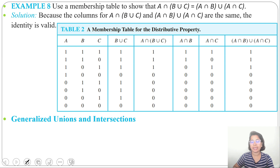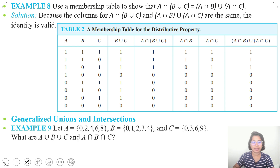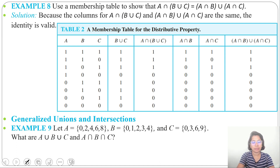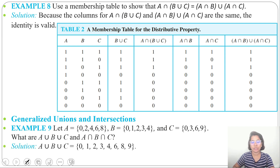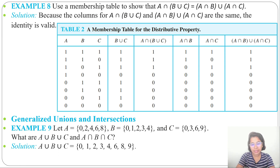Next is generalized union and intersection — how to find union and intersection of multiple sets. Example 9: we have three sets A = {0, 2, 4, 6, 8}, B = {0, 1, 2, 3, 4}, C = {0, 3, 6, 9}. For A ∪ B ∪ C, it contains all elements present in A, B, and C, so it is {0, 1, 2, 3, 4, 6, 8, 9}.